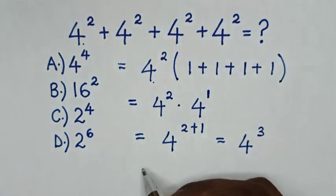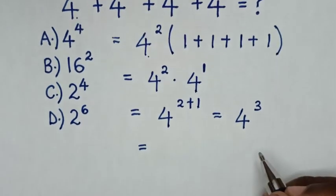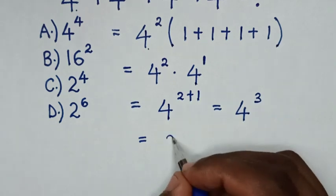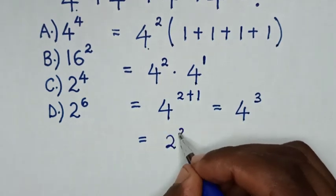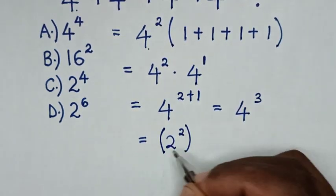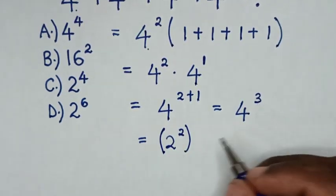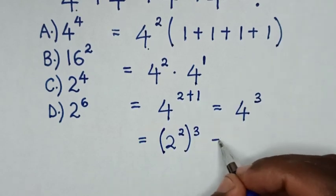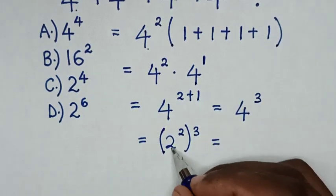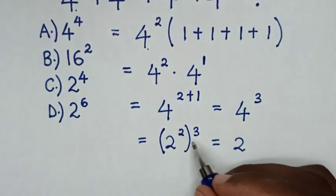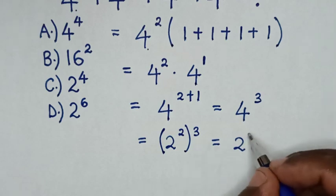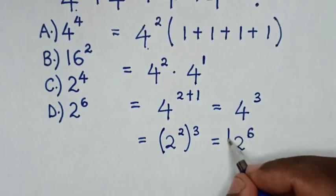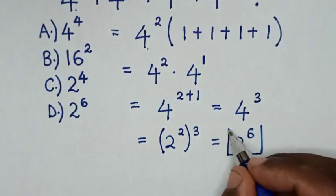In the next step, it will be equal to: 4 is the same as 2 power of 2, then bracket, power of 3. So it will be equal to 2 power of 2 times 3, which is 2 power of 6. So this is our final answer.